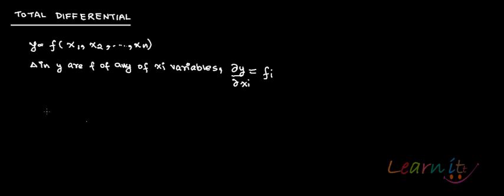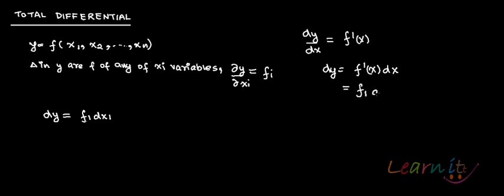This partial derivative could even be written as fi. So total differential of the function, that is dy, can be written as f1 dx1. You remember that dy by dx is equal to f dash x. Then we have written dy equals f dash x into dx. Here in this case, when you have several partial derivatives, you don't write f dash x, you write f1, and this is dx1.